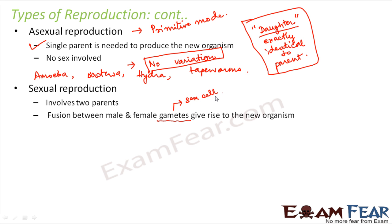The male contributes a male sex cell, the female contributes a female sex cell, both fuse together to form one new cell, and this new cell undergoes repeated division to form a multicellular structure that becomes a new organism. In sexual reproduction there is a very clear distinction between male and female sexes, and sexual intercourse between male and female is required for fusion of their gametes.